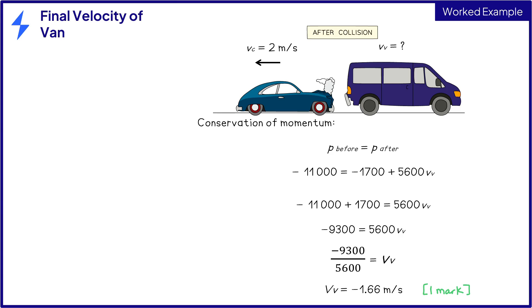This means the van continues reversing after the impact with the car, but does so at a slower speed. Show each step of the rearrangement so you are less likely to make a mistake.